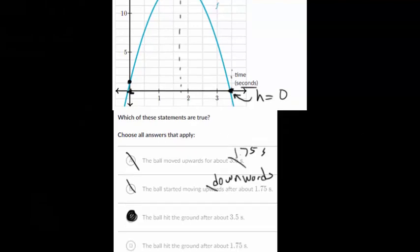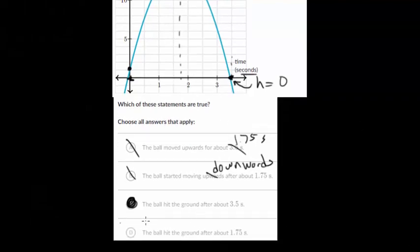And let's look at the final one. The ball hit the ground after about 1.75 seconds. Well, that's when it reached its maximum height. That's right here when the ball was way up top. And we already know it can't be both of these. It has to be just one of them. And we already verified that choice C was right. So in this case, there actually was only one answer. And that answer was choice letter C.